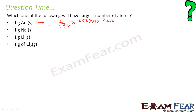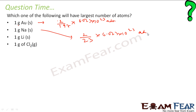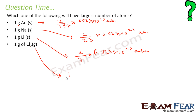Because 197 grams of gold contains 6.023 × 10²³ atoms, due to its molar mass. So 1 gram of gold has 1/197 × 6.023 × 10²³ atoms. 1 gram of sodium will have 1/23 × 6.023 × 10²³ atoms. 1 gram of Cl2 will have 1/71 × 6.023 × 10²³ atoms.